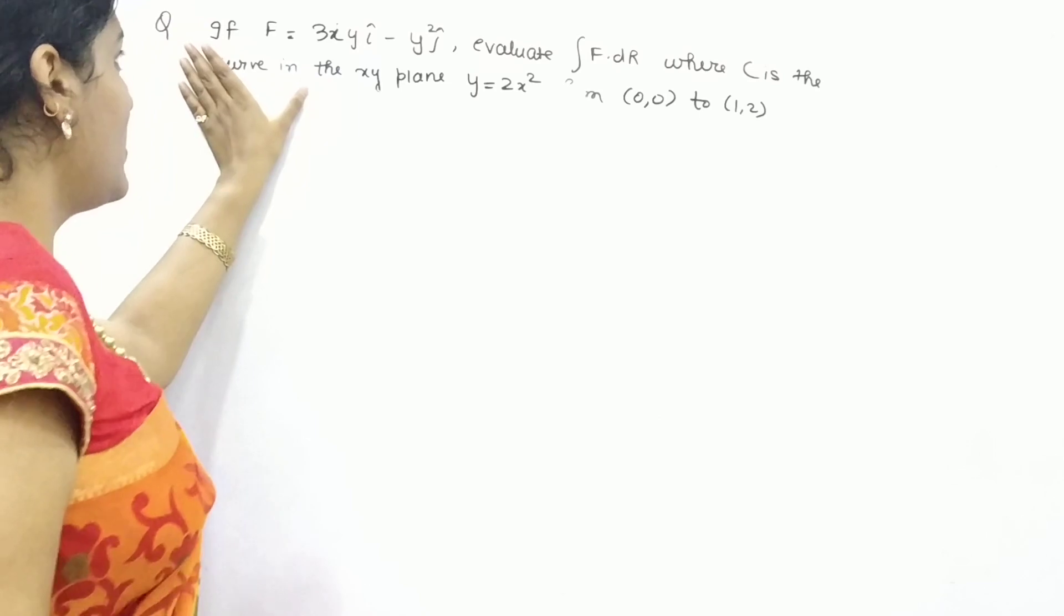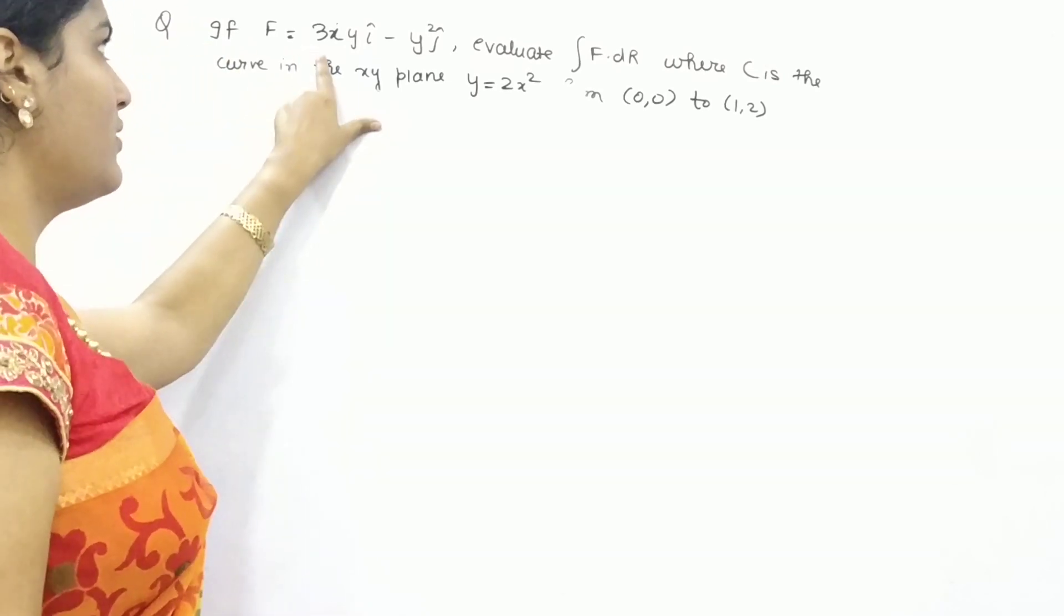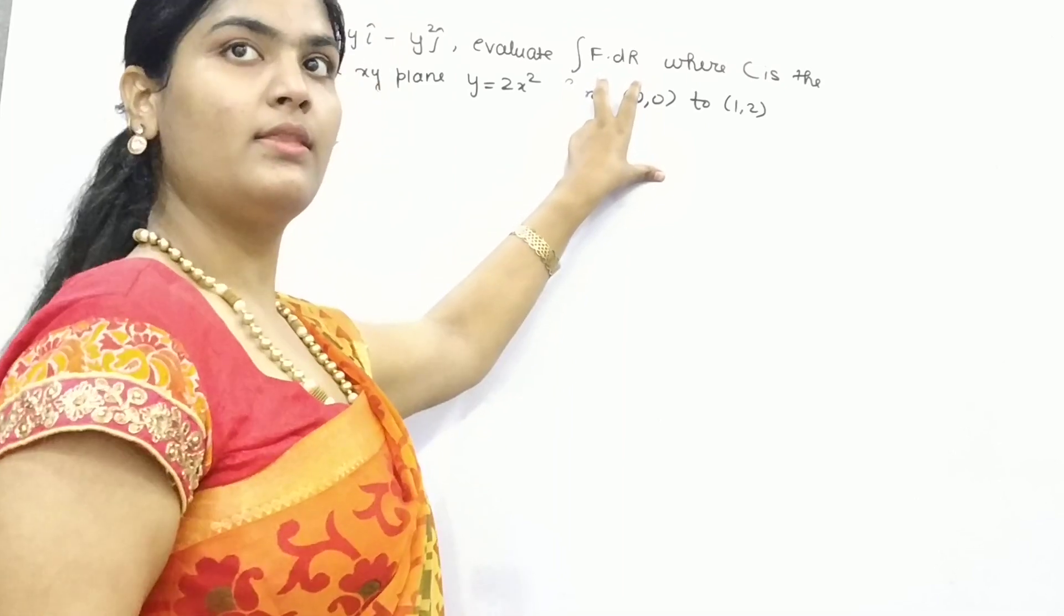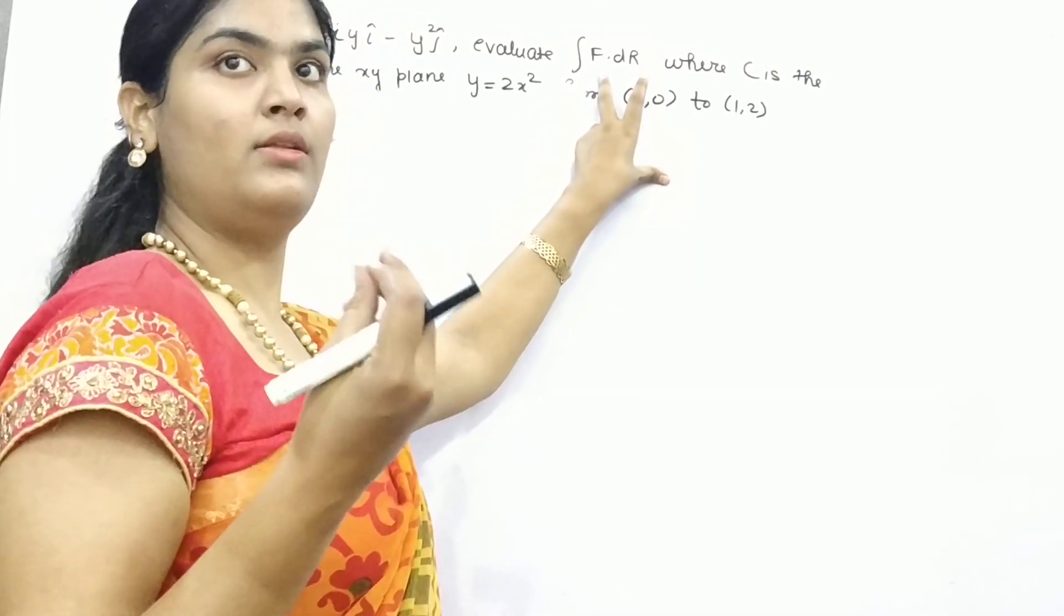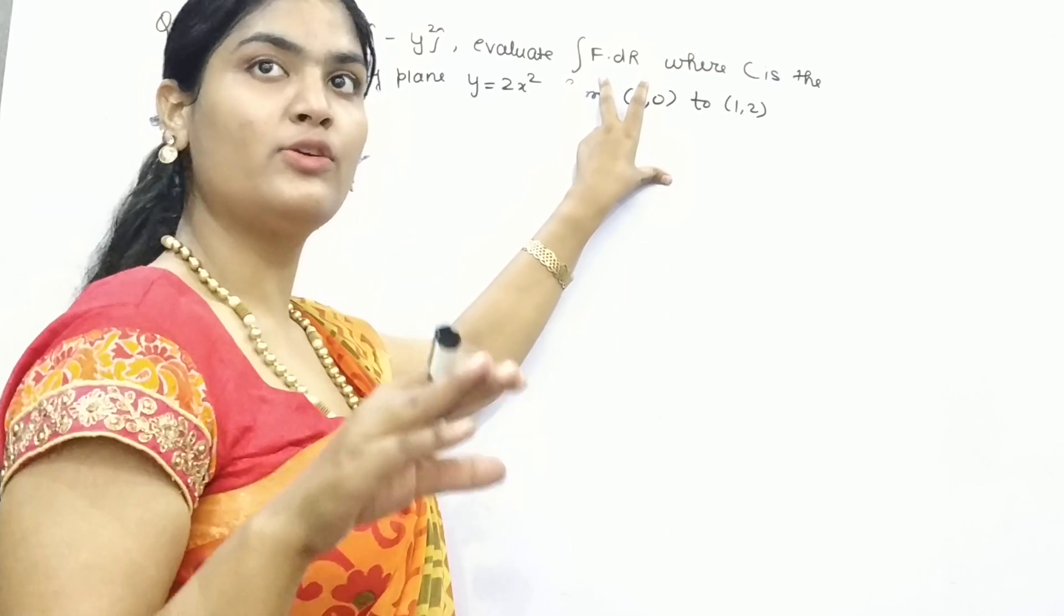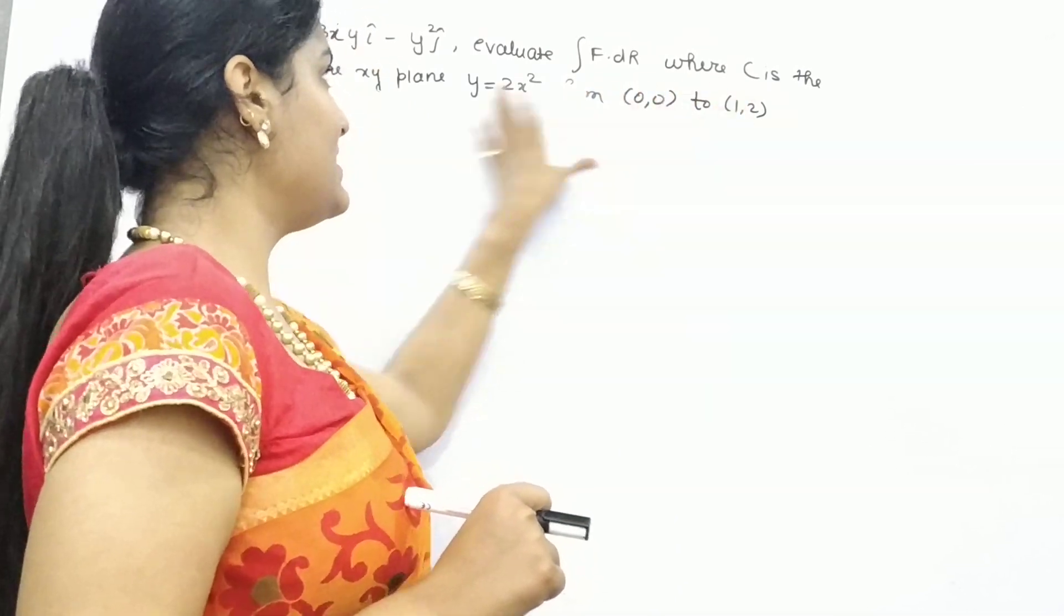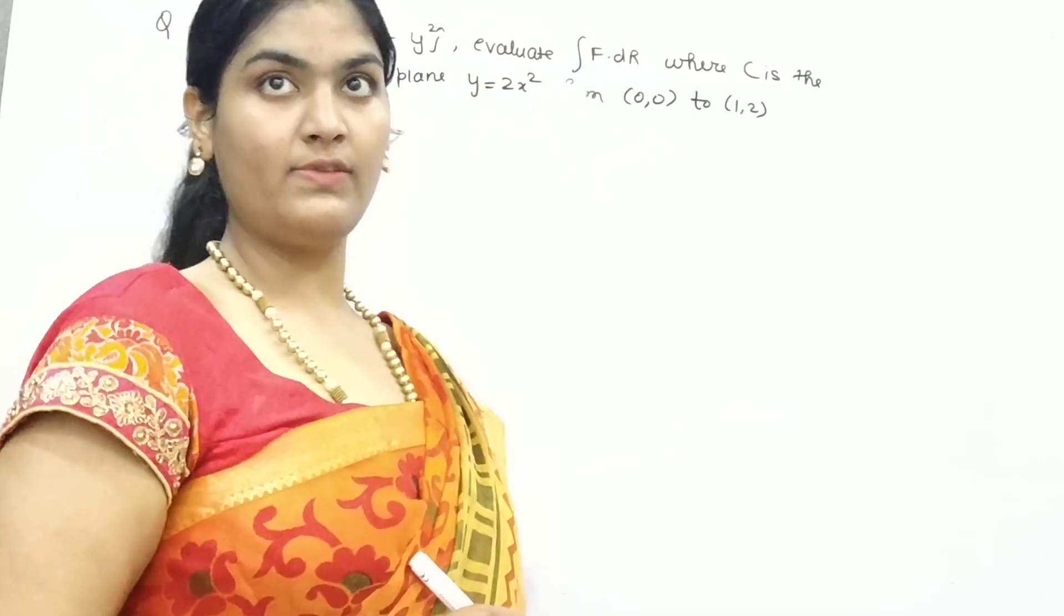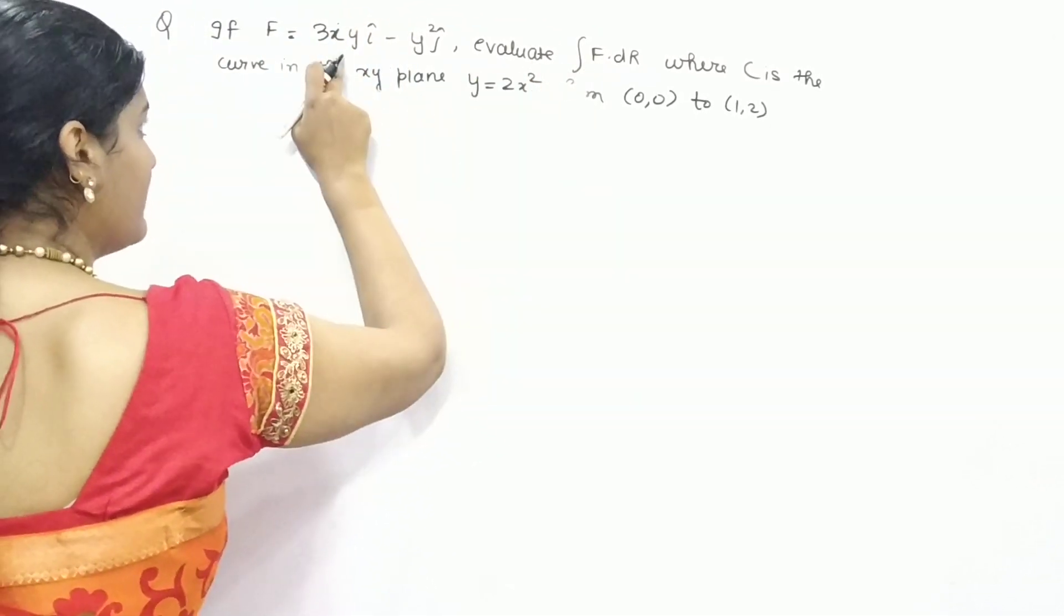Here you are given with a function in the form of x and y. You need to evaluate the line integral, that means an integral when the points on the curve are given to you. We see the curve, this is equation of parabola, points are also given to you. So what you can do, first of all f is given.